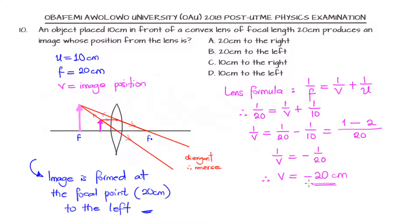You can see we're getting the same thing: minus 20 centimeters. It's minus because it is to the left side of the lens, it's being reflected back, it is virtual. So the correct option is option B.